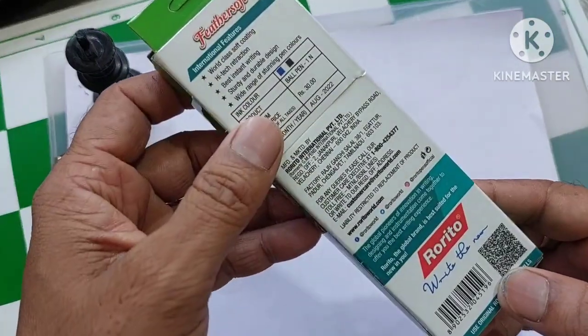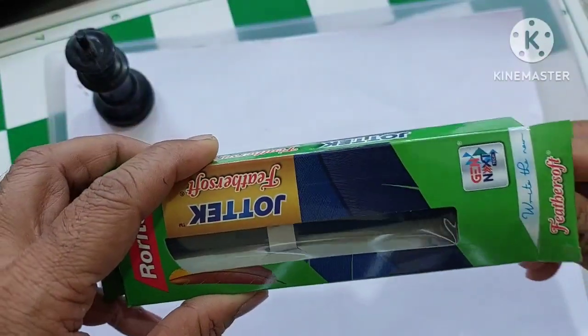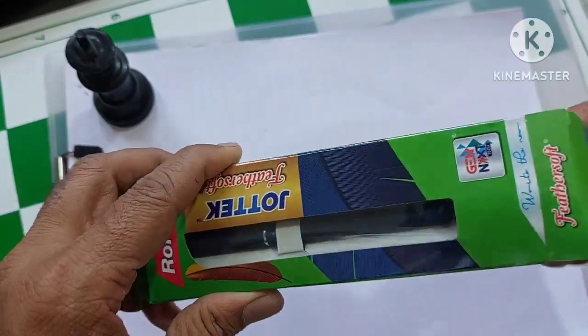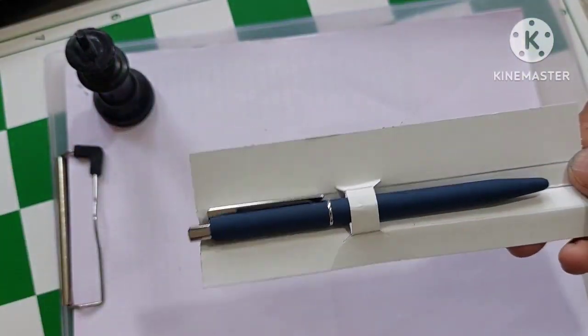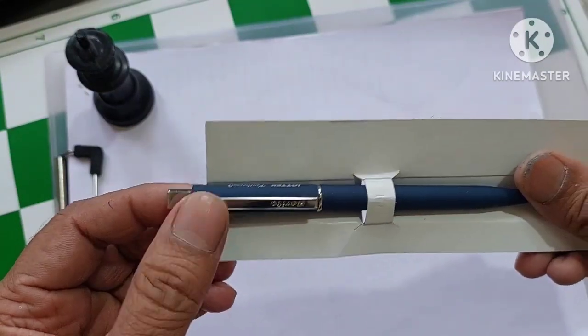This is the box and the pen is inside. Let's open the pen and see how it looks. This is the pen, it is Jyotec from Rorito.